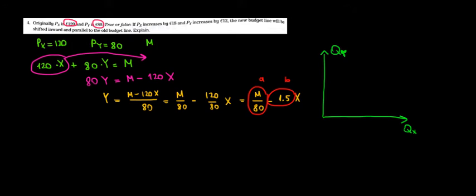So we don't have an exact number. We'll just call it M divided by 80. Let's put it here. M over 80.